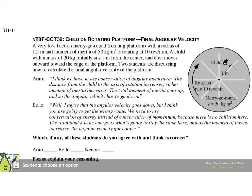Here's one problem to go along with what we've been talking about. We have a low-friction merry-go-round with a radius of 1.5 meters and a moment of inertia of 50 kilogram·meter² rotating at 10 revolutions per minute. A child with mass 20 kilograms initially sits one meter from the center and then moves towards the outer end of the platform. Two students discuss how to calculate the final angular velocity. Arno says we have to use conservation of angular momentum: the distance from the child to the axis increases, so the whole moment of inertia increases, and therefore the angular velocity has to go down. Bell says she agrees the angular velocity goes down, but we need to use conservation of energy because there is no collision here — the rotational kinetic energy is what stays the same.